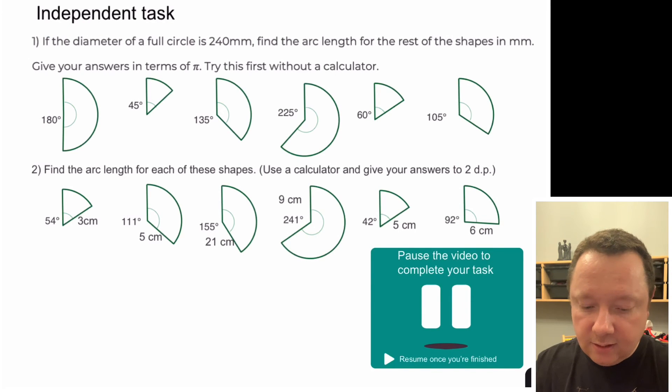If the diameter of a full circle is 240 millimetres find the arc length of the rest of the shapes in millimetres. So for question one you have to do this in terms of pi. Go back in the video if you need to and look to see how you've simplified the fraction and just leave your answer as pi. Don't do the actual sum in the calculator. But for question two, for each of these arcs use a calculator and find the answer correct to two decimal places. Pause the video here and then come back when you're finished.